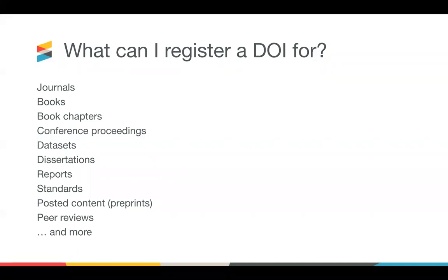At Crossref, we currently support deposits for the following types of content: journals, books, book chapters, conference proceedings, reports, dissertations, standards, posted content — which we also know as preprints — and peer reviews. You may register other types of content that don't fit into these categories, and we collect some basic metadata, usually as a dataset, if it doesn't quite fit into one of these existing categories. We're hoping to provide support for additional content types in future.